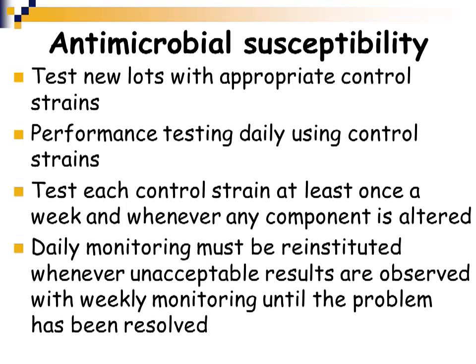Antimicrobial susceptibility is a very important aspect of quality control. Lots need to be tested with control strains, and any new test must first be validated with those control strains. Each laboratory has a specific set of daily, weekly, and possibly monthly monitoring and control testing. If an unacceptable result comes up during weekly monitoring, you must switch to daily monitoring until the issue is resolved.